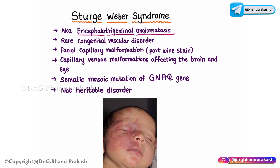Sturge-Weber syndrome is a rare congenital vascular disorder. The most important manifestation is the facial capillary malformation, often referred to as the port wine stain. Capillary venous malformations especially affect the brain and the eye — these are the two important organs to remember in Sturge-Weber syndrome.